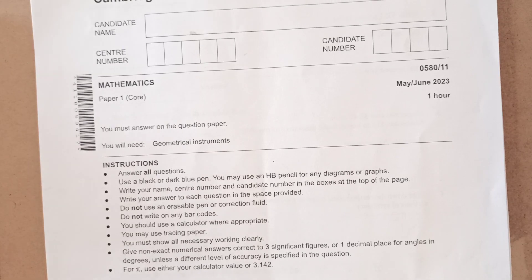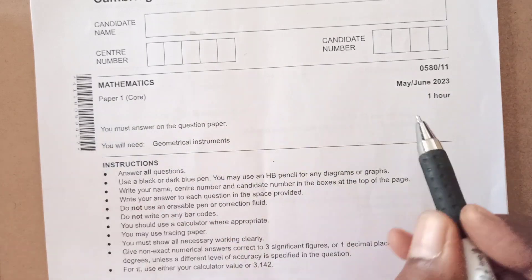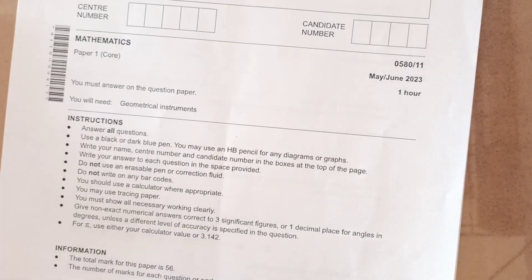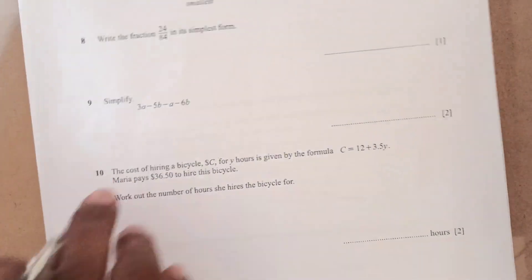Hello guys, welcome back. Today we will be going through Cambridge IGCSE Mathematics Paper 1 from May June 2023 series. You all know the instructions, here are the instructions, you can see that and then let us start with question number 1.